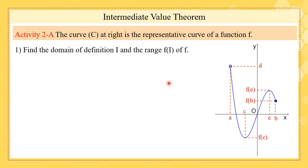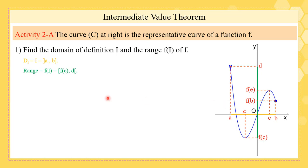The first part asks about the domain of definition and the range of f. The domain of definition is the interval (a, b] — open at a, closed at b, because here we have an open point and here a closed point. The range, projected on the y-axis (shown in green), is [f(c), d) — closed at f(c) and open at d because d is not attained.